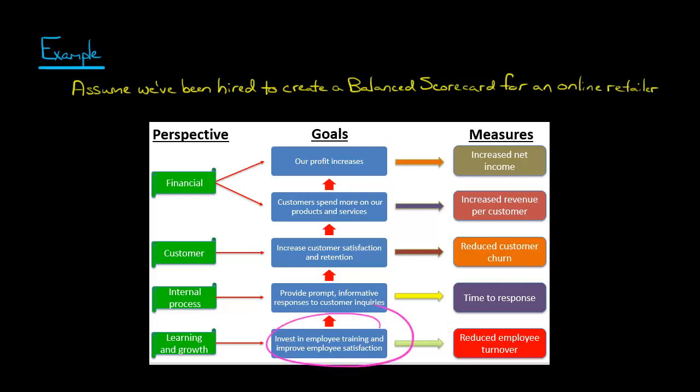Now, if we do this, if we actually succeed, we are assuming that there's going to be a cause and effect relationship that this is going to lead to better processes. And we have defined internal process in this fictional example. We said we wanted to provide prompt, informative responses to customer inquiries. So we're an online retailer. We might get emails and stuff from customers or questions, and we wanted to respond quickly with a good answer to people. We didn't want people waiting two days before they receive an email back from us, and so we wanted to measure that in terms of our time to response.